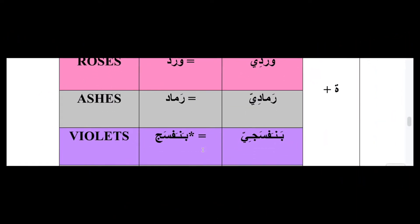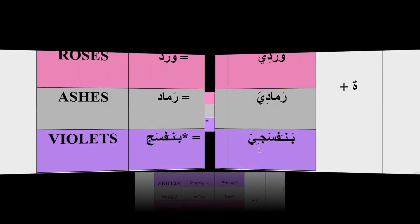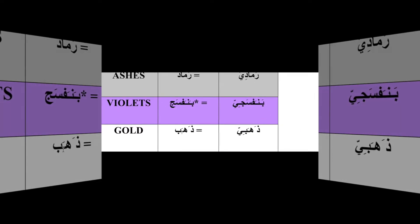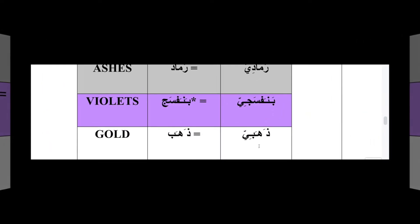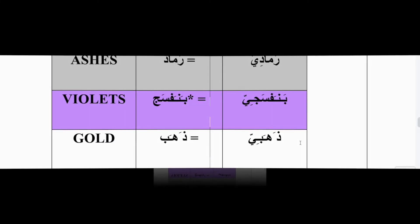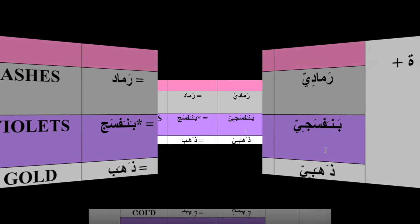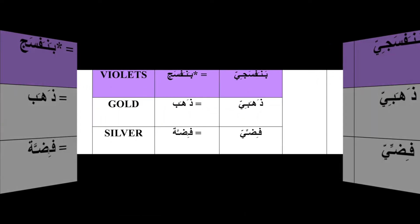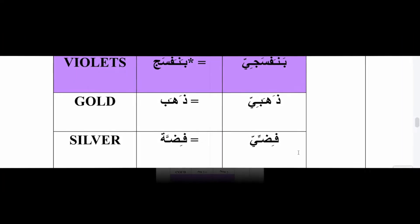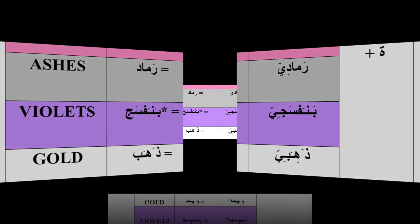Gold is ذهب in Arabic, and ذهبي is the adjective for gold-colored. The feminine is ذهبية, adding التامربوطة. Silver is فضة, and the adjective is فضي, with the feminine فضية, also adding التامربوطة.